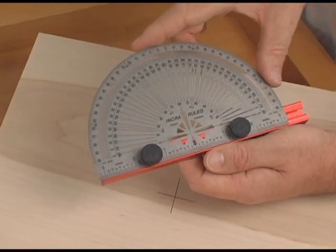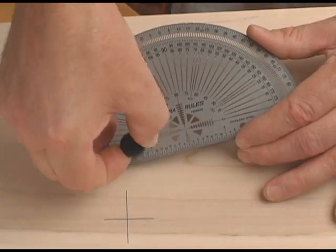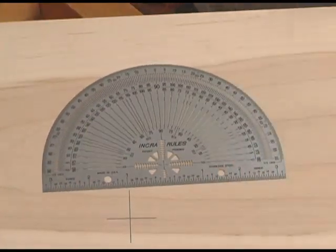The red T-bar is removable for using the protractor on the interior of your workpiece.